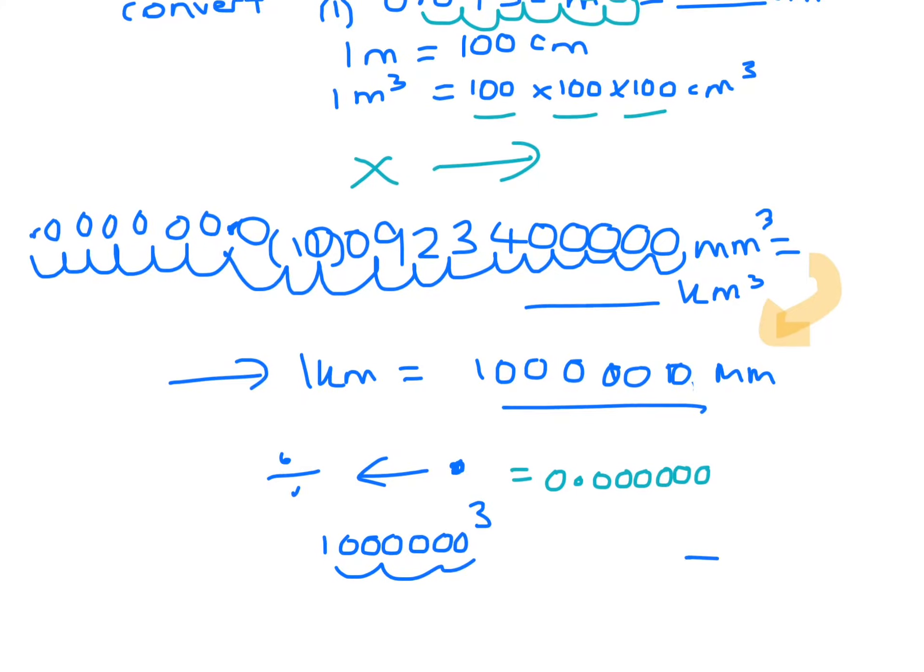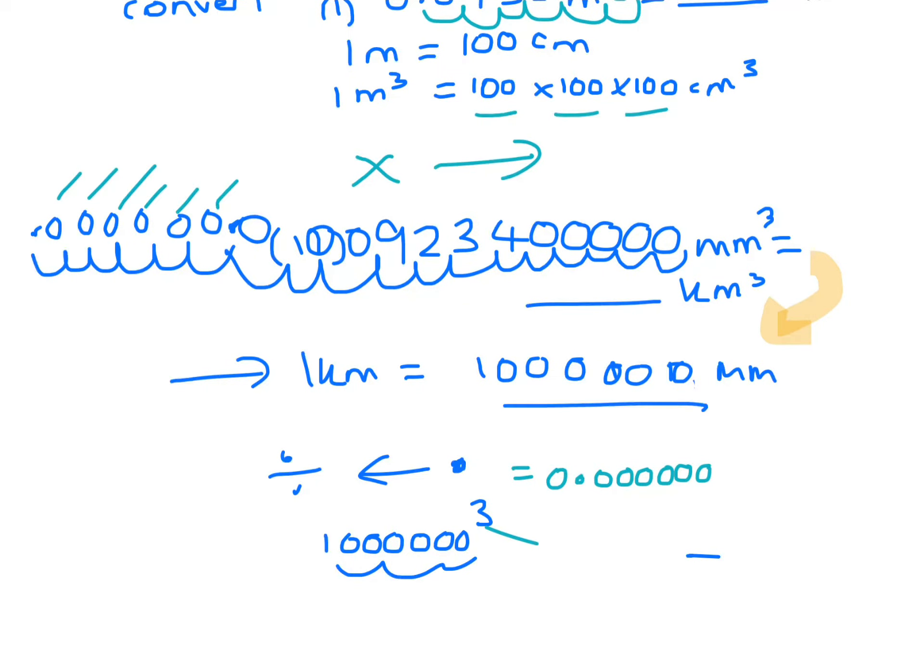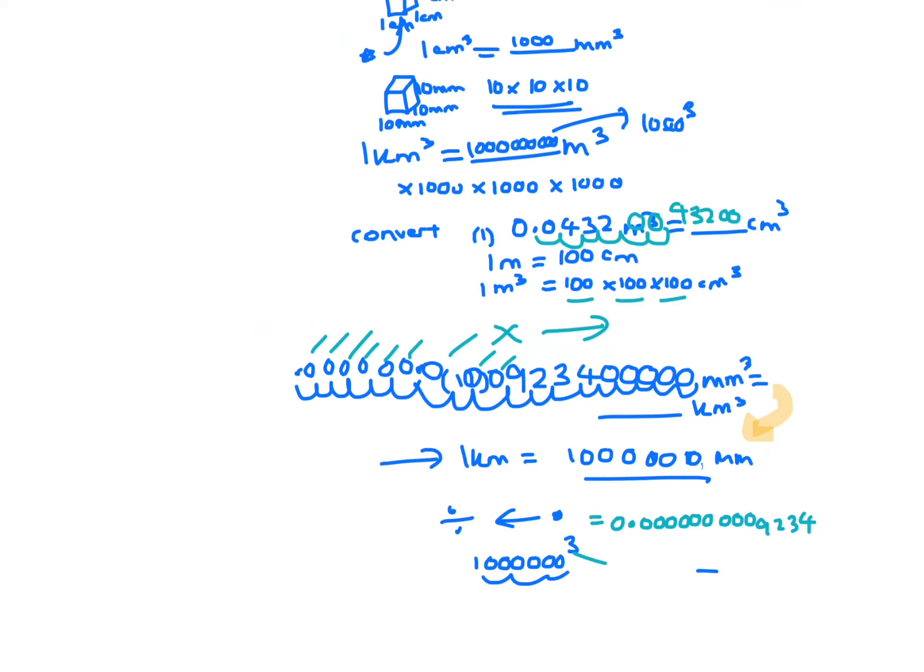Wait, working backwards from 923,400,000 and moving 18 decimal places gives us 0.0000009234. A mighty big number in the original units.